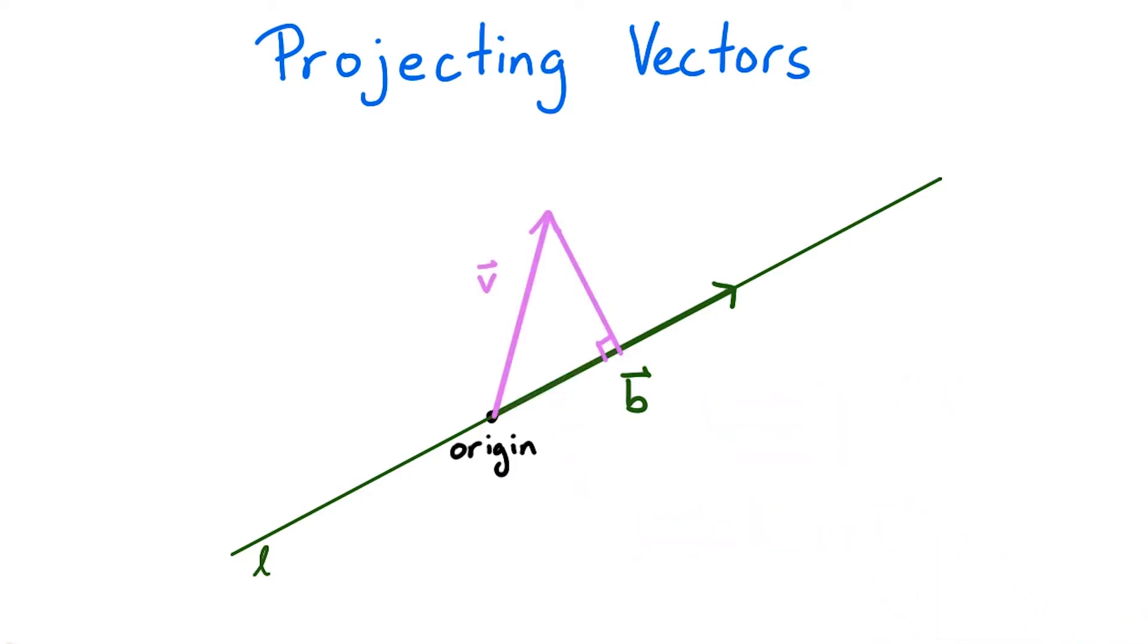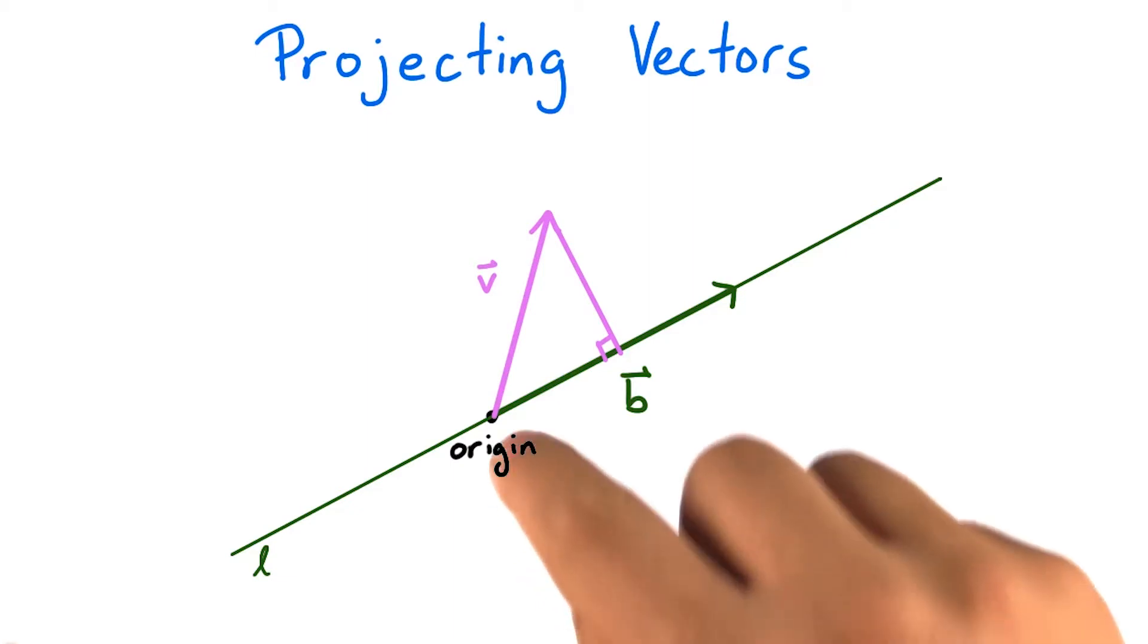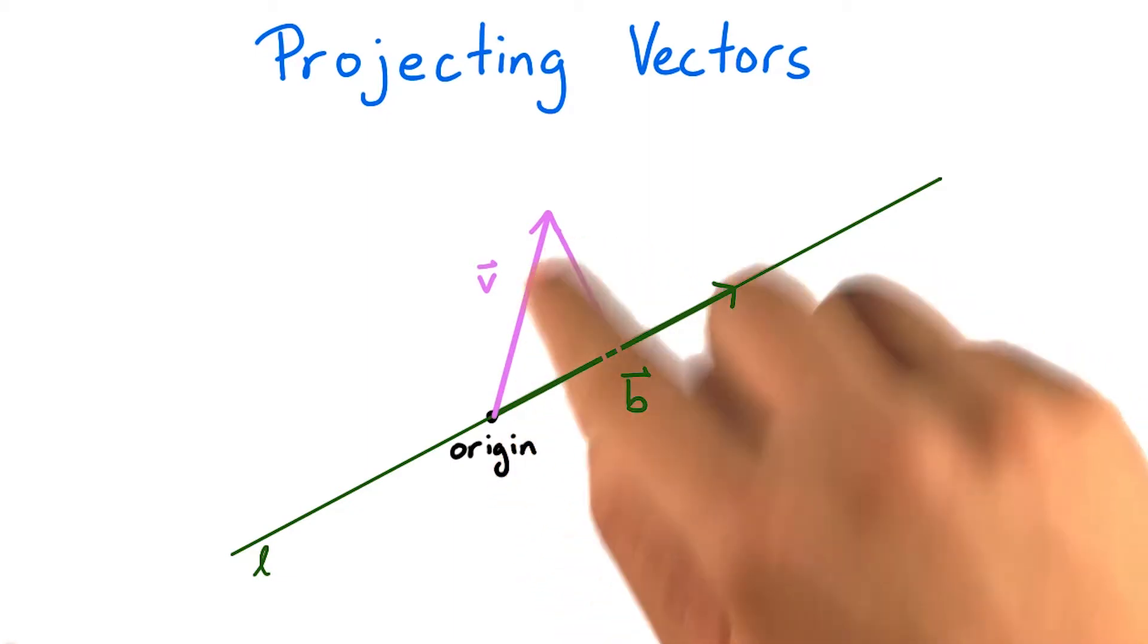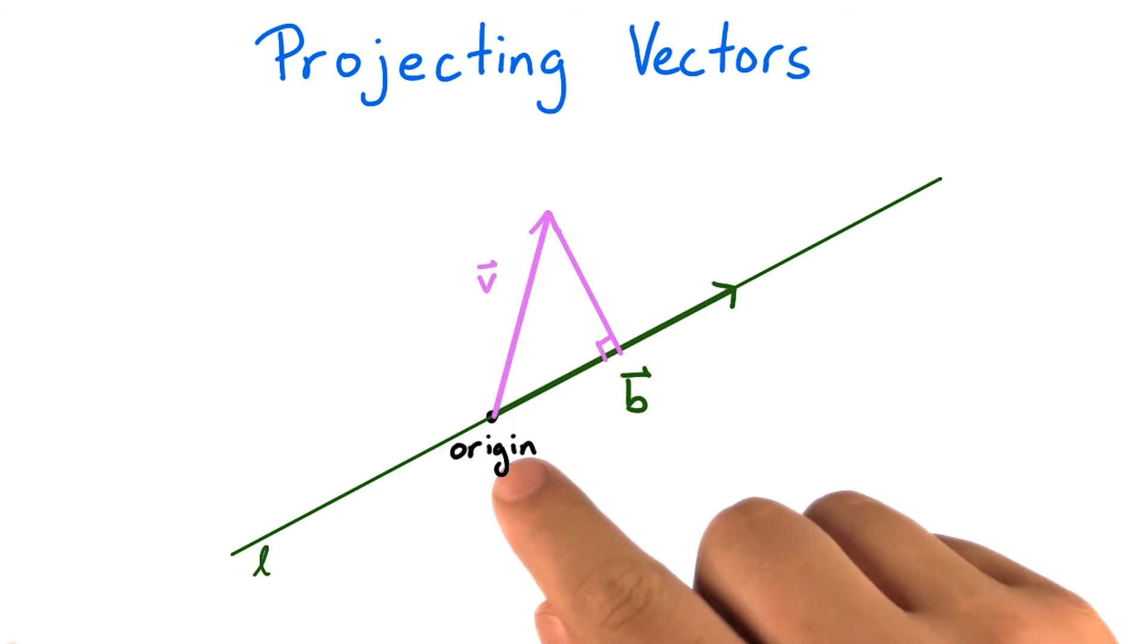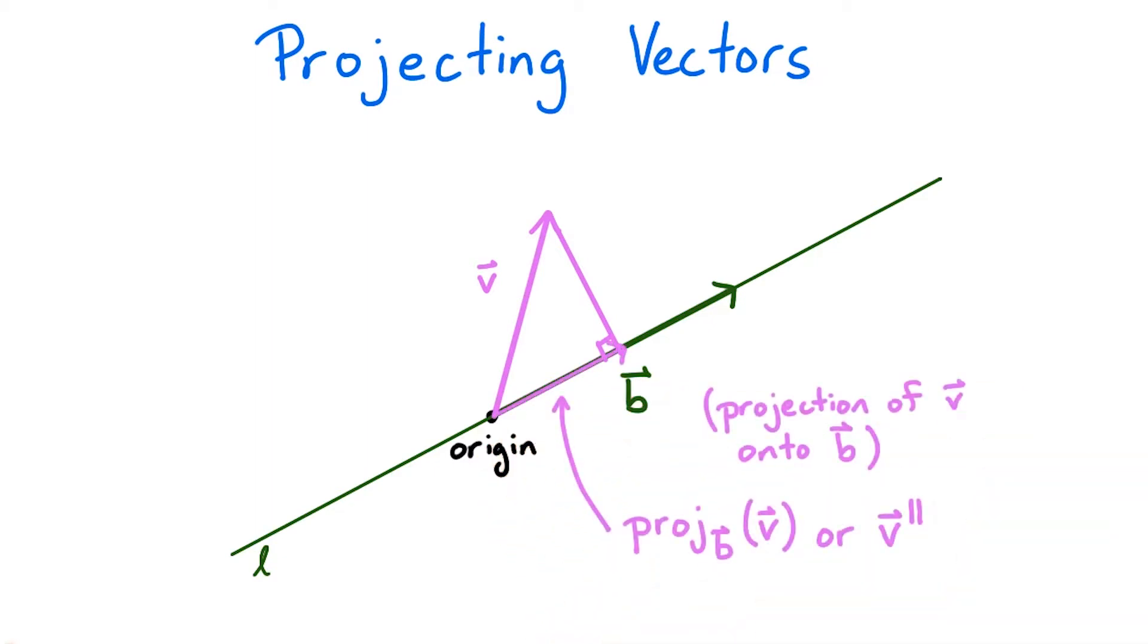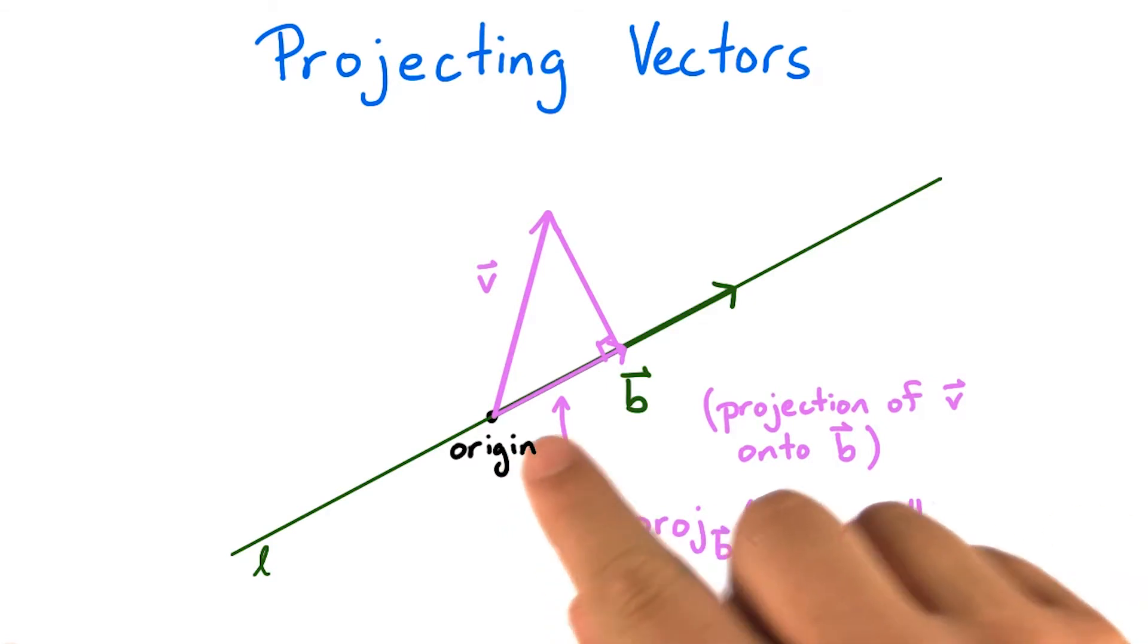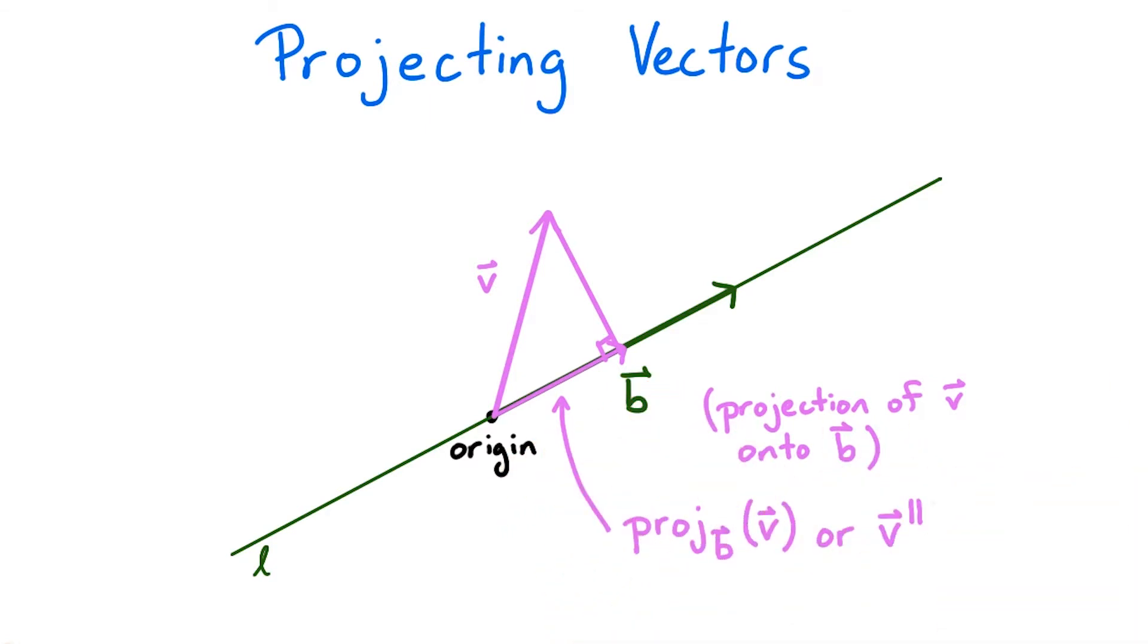Another way to describe projection is to draw a right triangle, whose hypotenuse is the arrow depicting v, and one of whose legs lies on the line l. If we draw a vector from the origin along this leg, that drawn vector will also be the projection of v onto b.